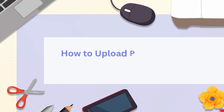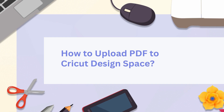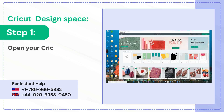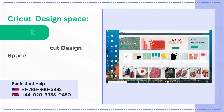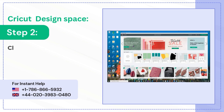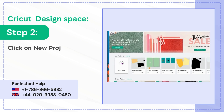How to Upload PDF to Cricut Design Space. Step 1: Open your Cricut Design Space. Step 2: Click on New Project.